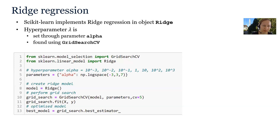Scikit-learn implements ridge regression in the object Ridge, and the hyperparameter lambda is set through the parameter alpha and found using GridSearchCV. We have seen that already for the case of polynomial regression.